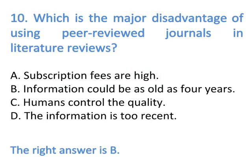Number 10: Which is the major disadvantage of using peer reviewed journals in literature reviews? The right answer is B, which is information could be as old as four years.